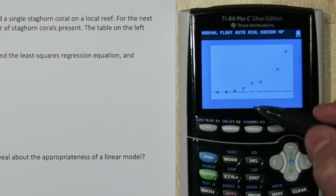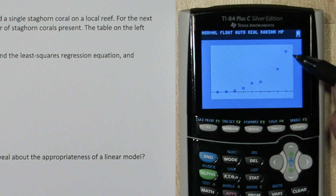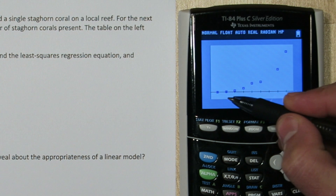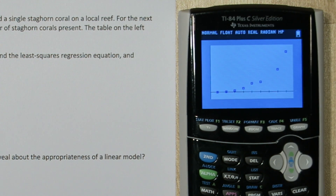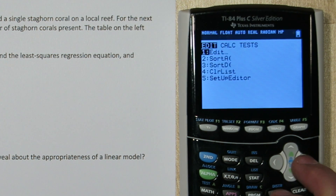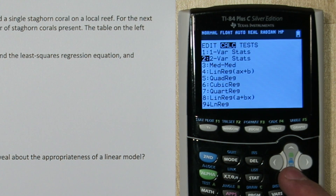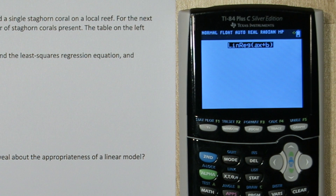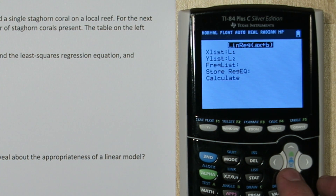Now there's obvious curvature here. That suggests a linear model is not appropriate. But it says find the least squares regression equation. So if we press stat and go to calculate, linear regression, we'll leave this as list 1 and list 2.